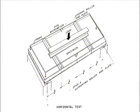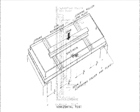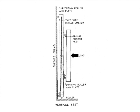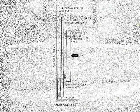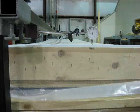The transverse strength of a wall can be tested either vertically or horizontally, though standard industry practice is to perform the test horizontally. The remainder of this video will discuss the horizontal method, though the difference between the two are slight.